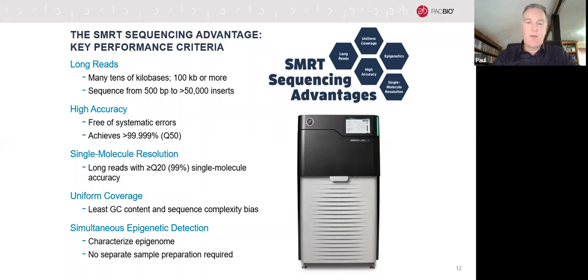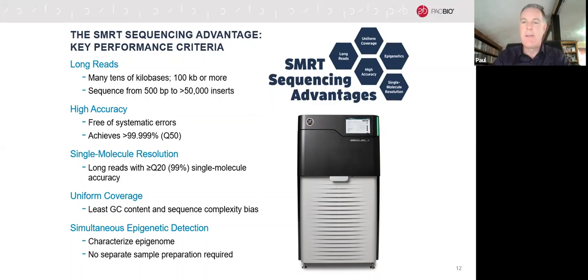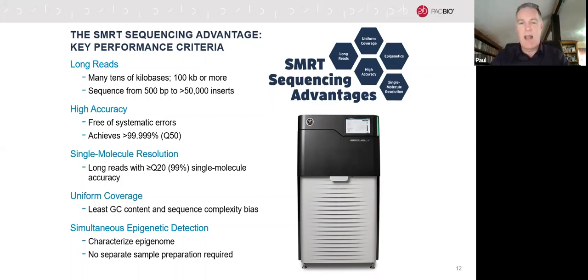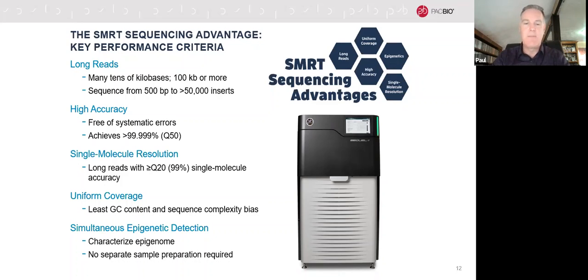An added bonus is epigenetic detection: if your DNA is methylated, you can detect that without extra chemical reactions. Because of the regular cadence of the polymerase, methylated bases take slightly longer to process, breaking the rhythm. The software looks for those breaks in timing and calls a methylation event. So you're able to characterise epigenome modifications as well, essentially for free, incorporated into the timing of how the data is collected.